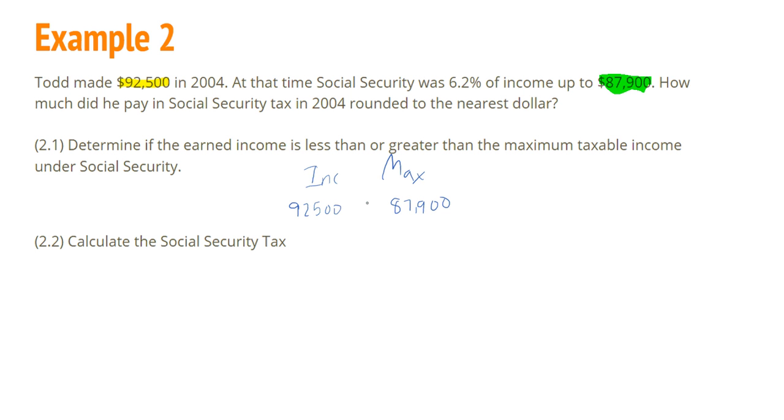So the earned income is $92,500. The maximum income is $87,900. Well, $92,500 is greater than the maximum income. So we just get to use $87,900 because we can't get taxed on anything over that.